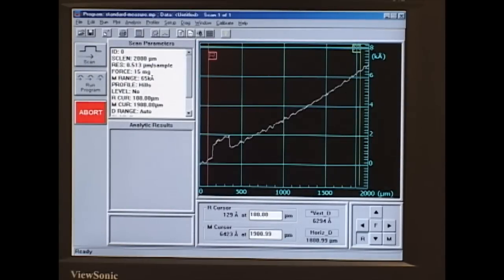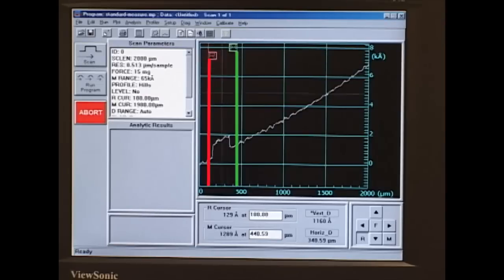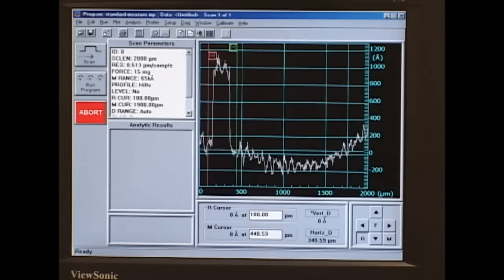A lot of times when we do these measurements, the instrument doesn't pick up on how level our sample is. So we'll want to level it. And we can use these two cursors, R and M. We'll put them on two points that we know should be level. And we'll click in this toolbar on level the trace at the current R and M cursor intercepts. So now we have something that's level.